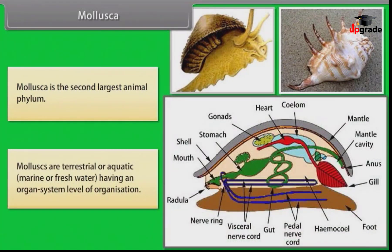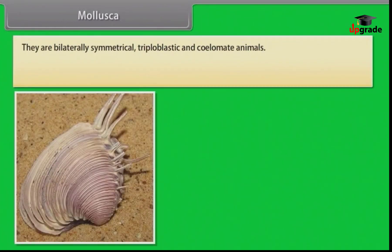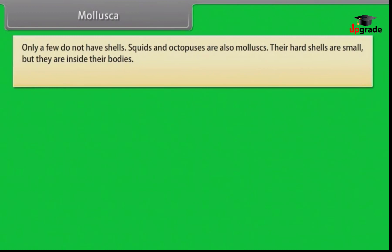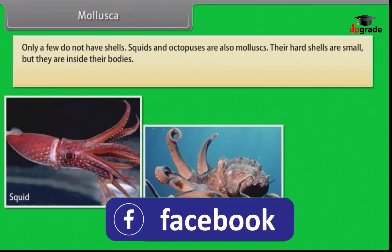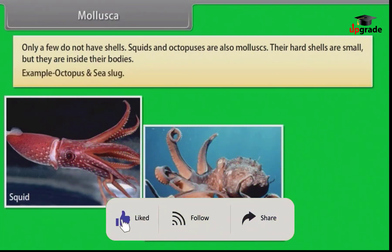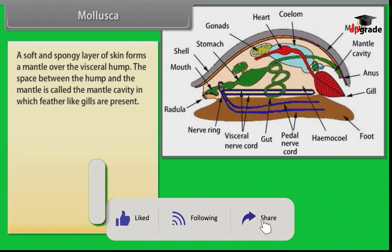Mollusca is the second largest animal phylum. Molluscs are terrestrial or aquatic — marine or freshwater — having an organ system level of organization. They are bilaterally symmetrical, triploblastic and coelomate animals. The body is covered by a calcareous shell and is unsegmented with a distinct head, muscular foot and visceral hump. A clam has two shells joined together by a hinge. Only a few, like squids and octopuses, do not have prominent external shells.